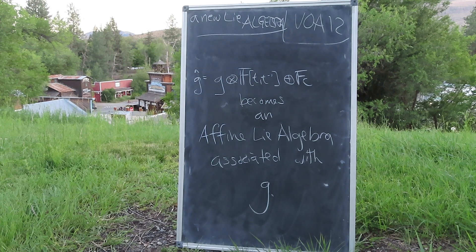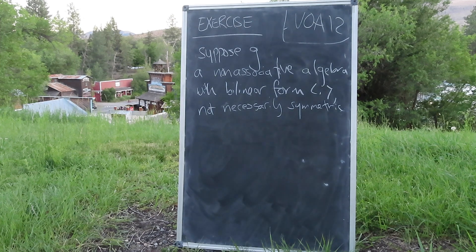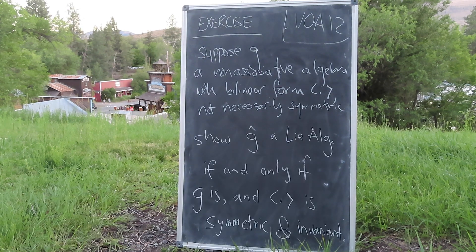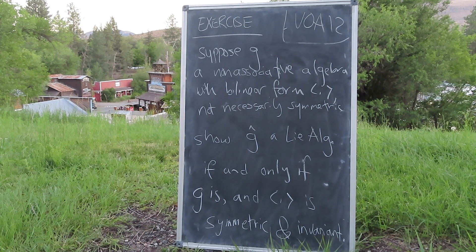G-hat with this bracket and central charge is called the affine Lie algebra associated with G and C. Here's an exercise to illustrate the mechanics of G-hat. Suppose G is some non-associative algebra with a bilinear form that need not be symmetric or G-invariant. Build G-hat by analogy with what we discussed above, and show that G-hat is a Lie algebra if and only if G is a Lie algebra and its bilinear form is both symmetric and G-invariant.